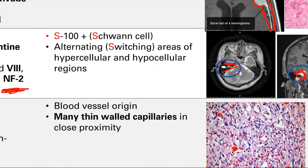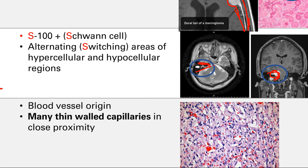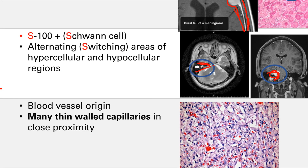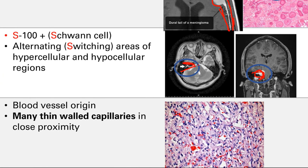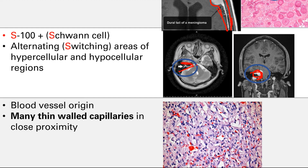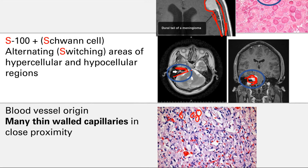This tumor is of blood vessel origin, so it can produce EPO, which stimulates red blood cell production, and you can get polycythemia — high red blood cells. On histology, it's going to be many thin-walled capillaries in close proximity, with tons of little red blood cells inside the capillaries.